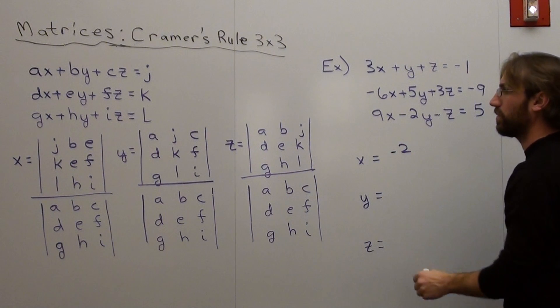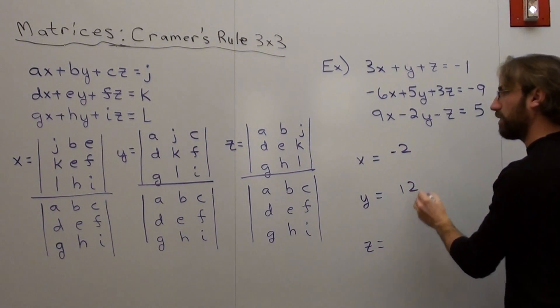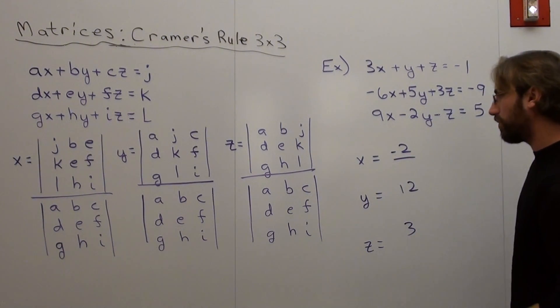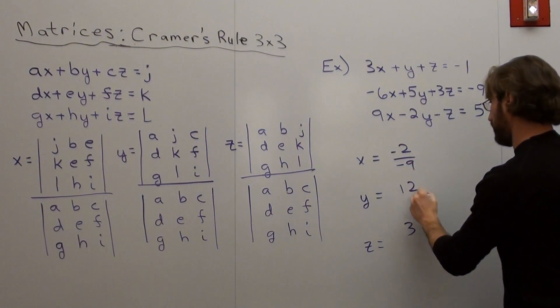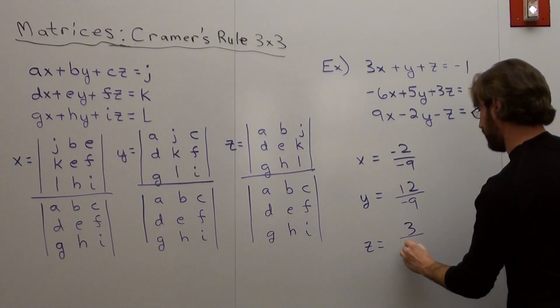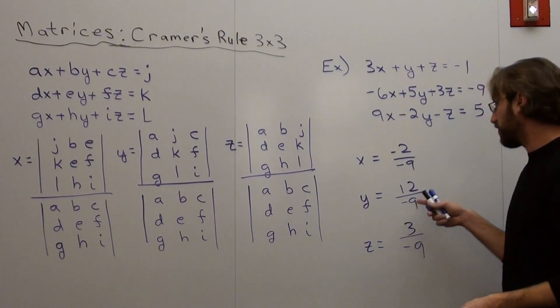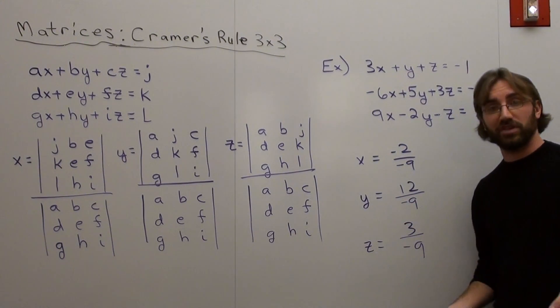2, 12, 13, and they're all over negative 9. You're going to get x equals negative 2 over negative 9, y equals 12 over negative 9, and z equals 3 over negative 9.